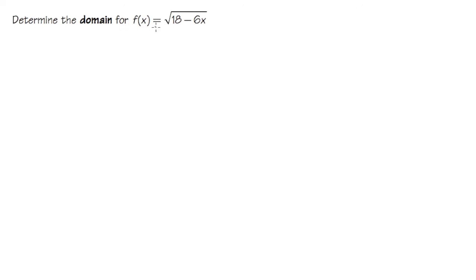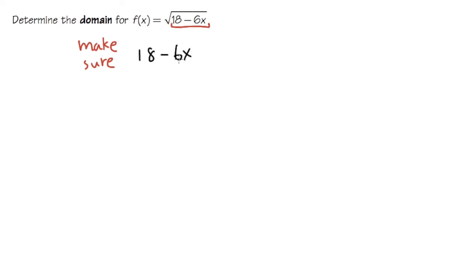So in this situation, we're just going to look at the inside. We need to make sure the inside expression, which is 18 minus 6x, is all we worry about. We need to make sure that it's not negative. It's okay to have 0, and we want the inside to be positive. Therefore, we set this down as greater than or equal to 0.